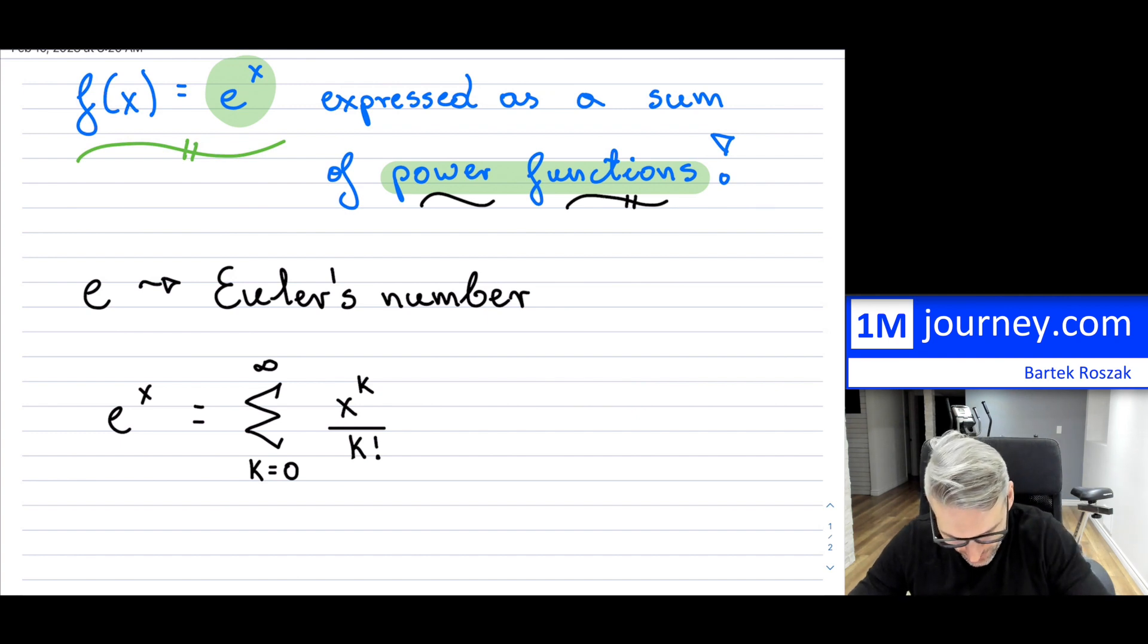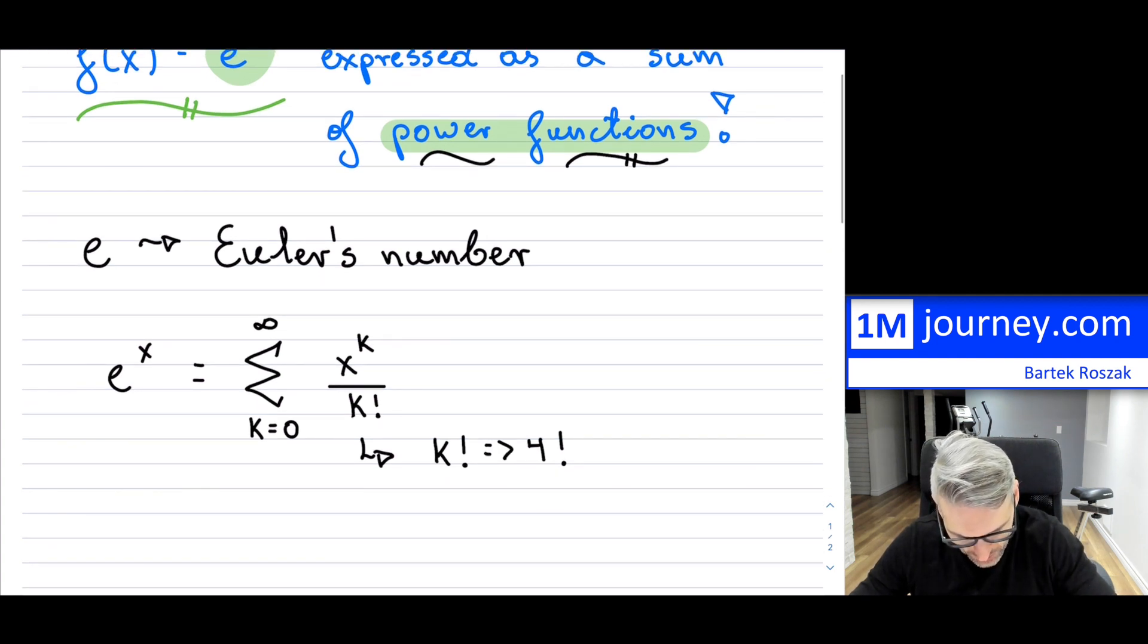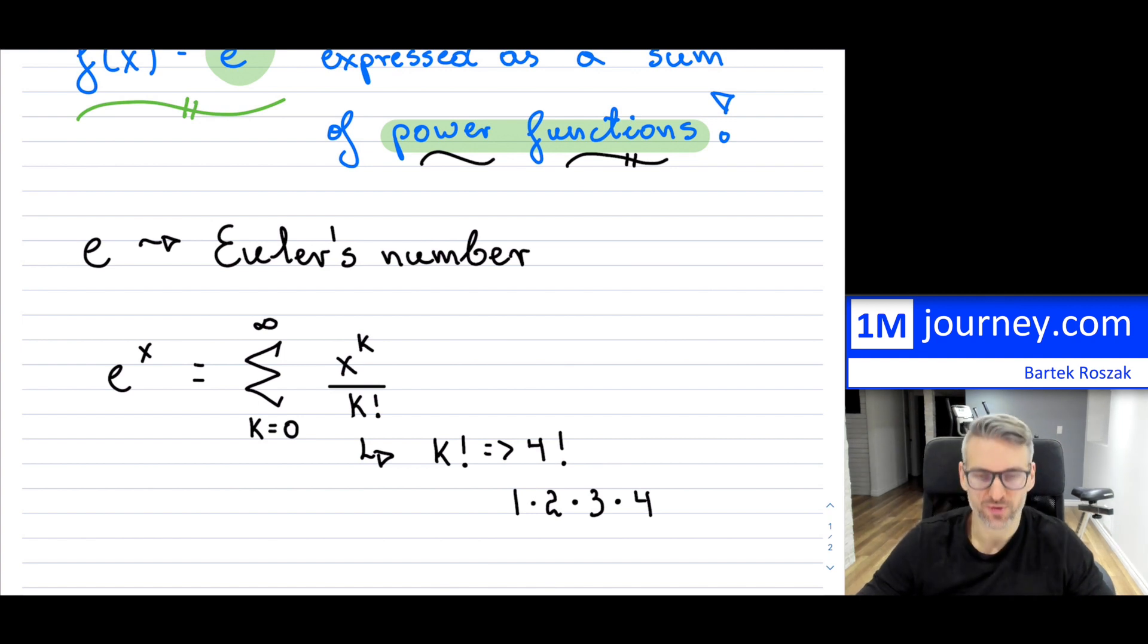Now, k factorial. So for those students who are not as familiar, for instance if k is equal to, let's say, 4, it would have been 4 factorial in some particular way. So just a reminder that this simply means that you are just multiplying, so this would have been 1 multiplied by 2 multiplied by 3 multiplied by 4. So the factorial just means it's a multiplication as the numbers are increasing. I can put up a link up above there to the concept of factorial.